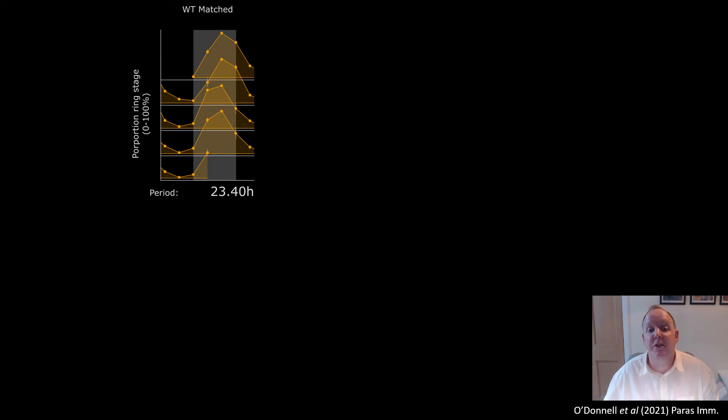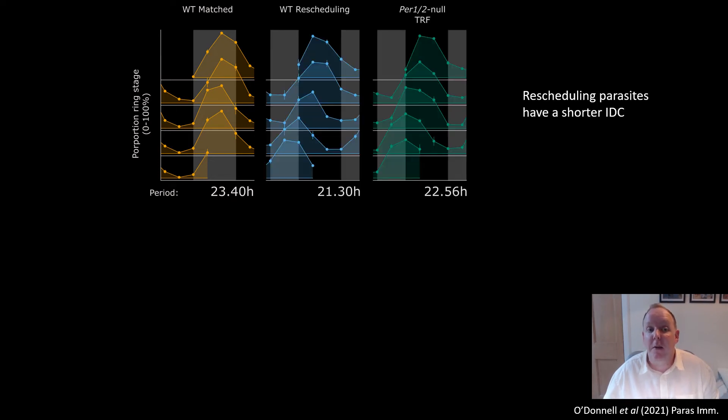So what do we find? First off, we have the matched group, where parasites don't need to change much at all. We find that the period, while not 24 hours, is pretty close to 24 hours. But in both the rescheduling groups, the period is sped up by one to two hours. And you can kind of see a shift to the left in these ring stage proportions shown here.